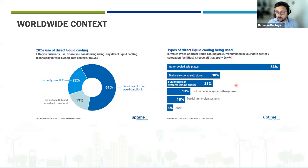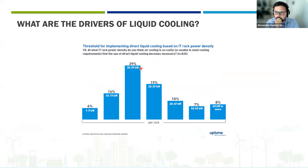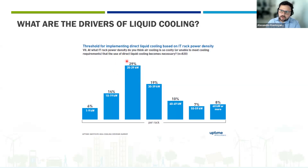The Uptime Institute also asked people what the threshold is to implement liquid cooling based on rack power. Most respondents said around 20 to 29 kilowatts per rack. But if you do the math, you can cool a rack with air cooling systems up to 55–60 kilowatts. So why do people think they need to go to liquid cooling beyond 30 kilowatts? In my opinion, this question is wrong.